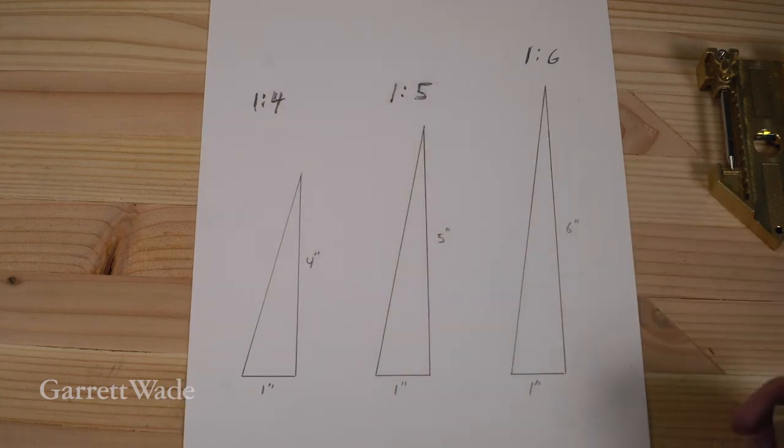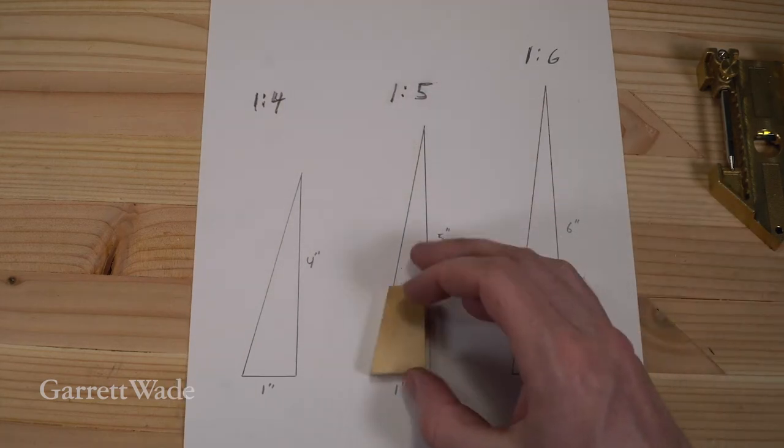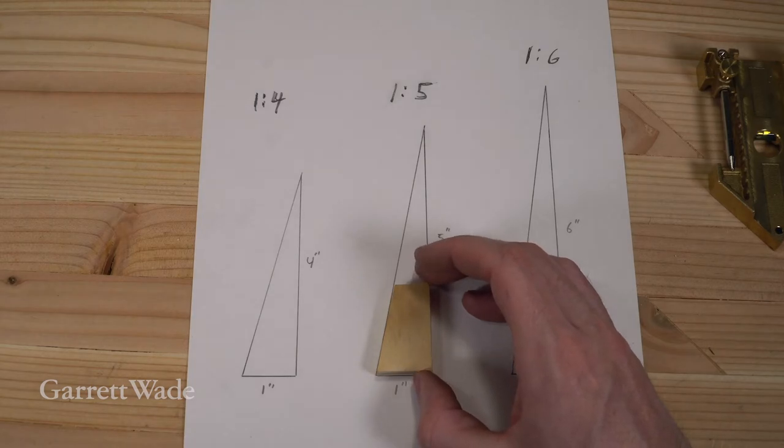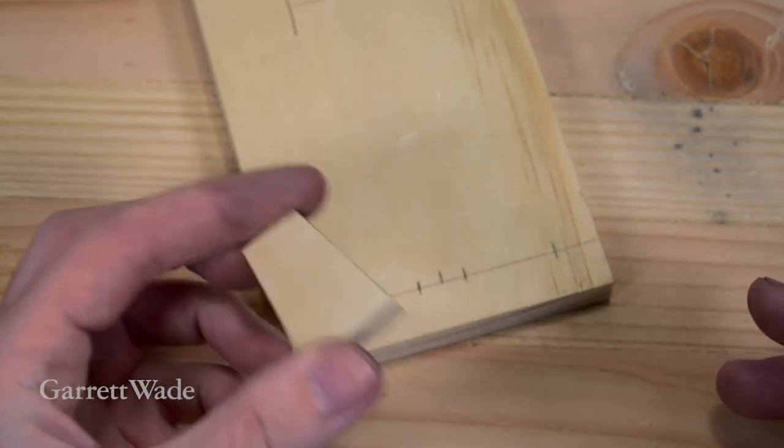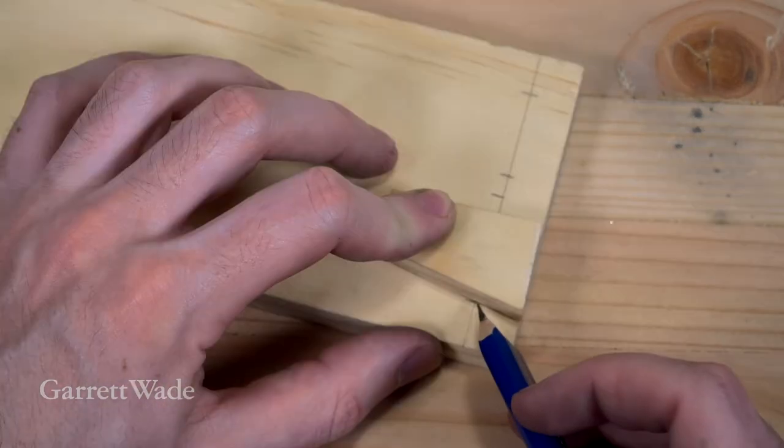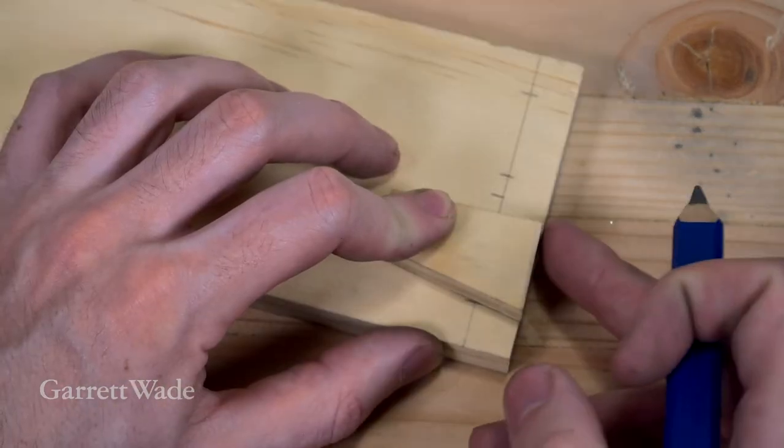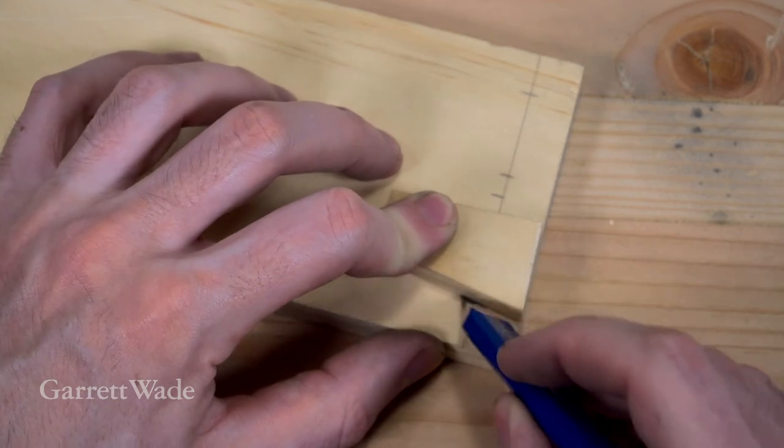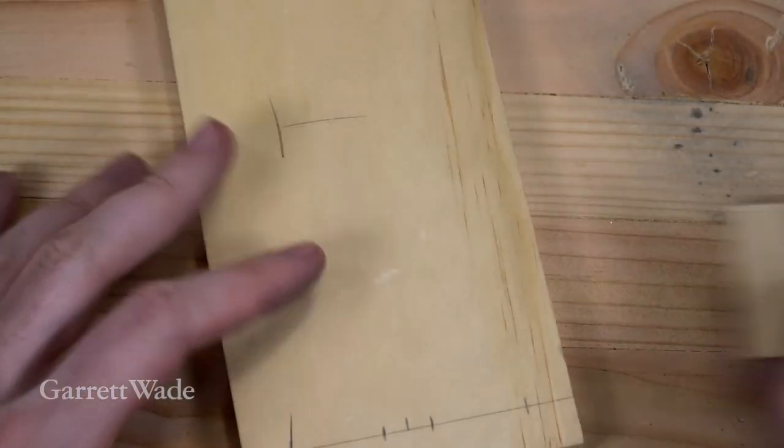I'm going to go with the one to five. And to make my life easier, I cut a portion of the triangle out of a piece of wood and I'll use that as my gauge. Just line it up with the beginning of my tail and make sure it's flush here. And that's the first part of my tail.